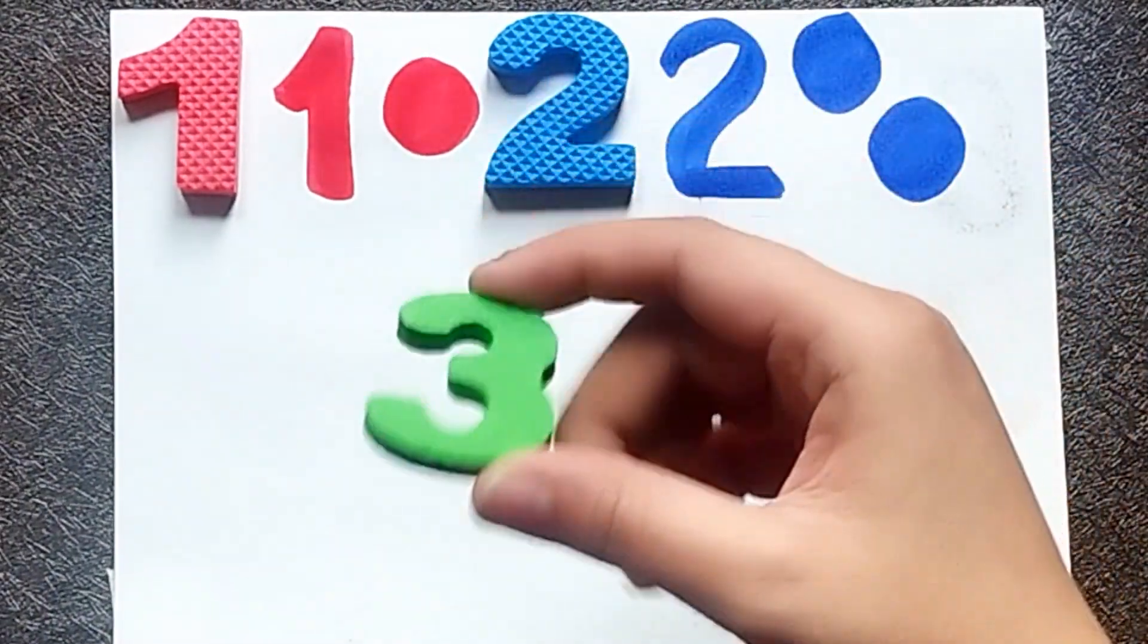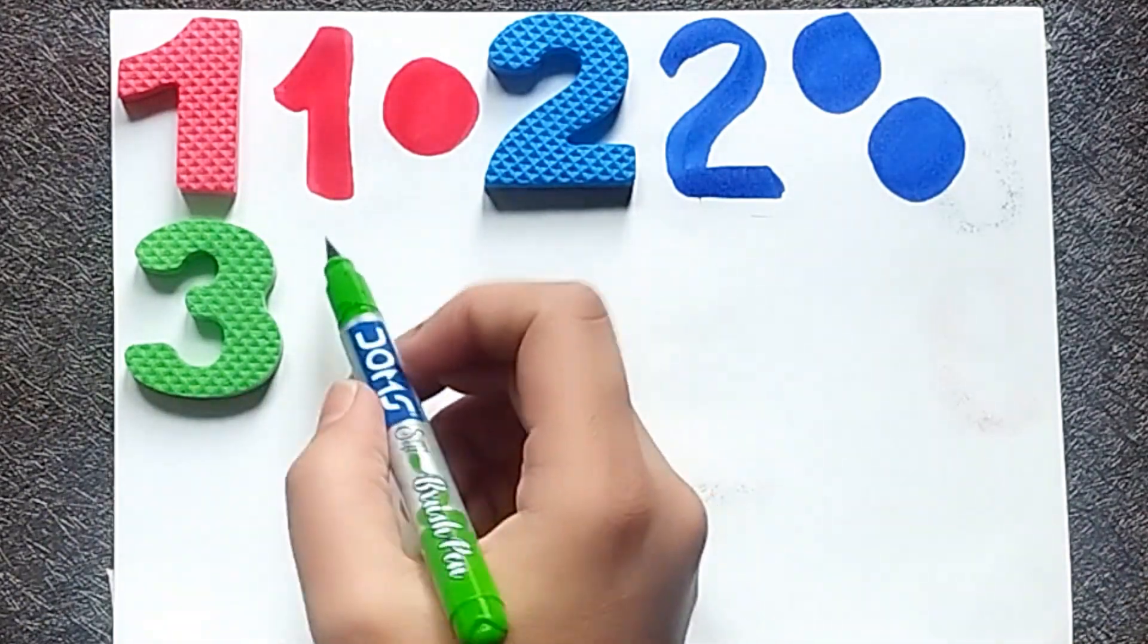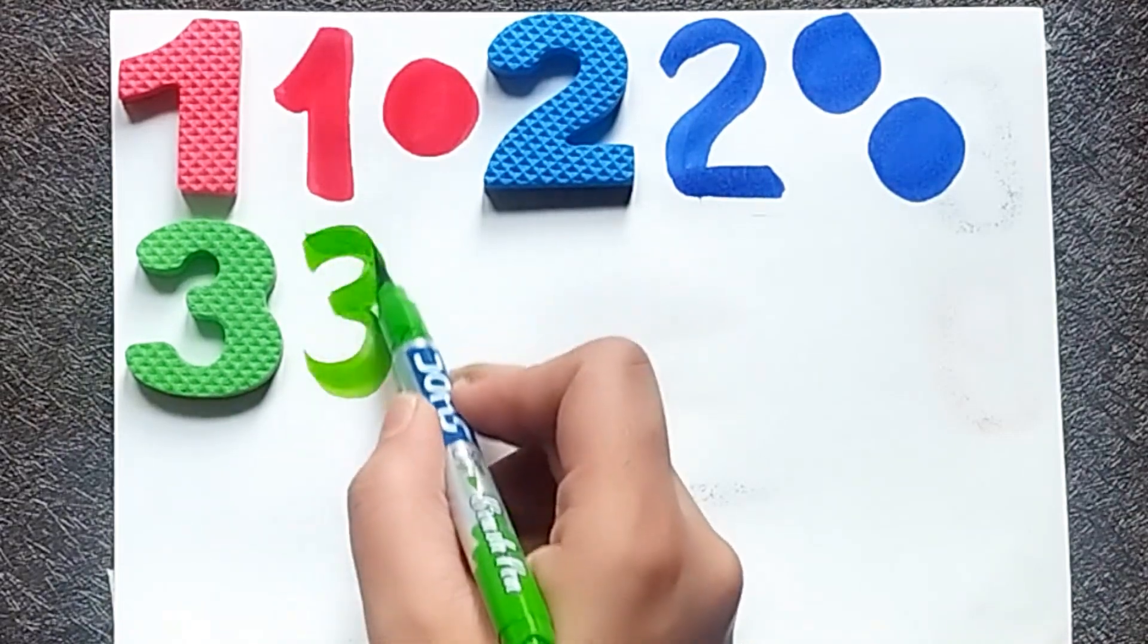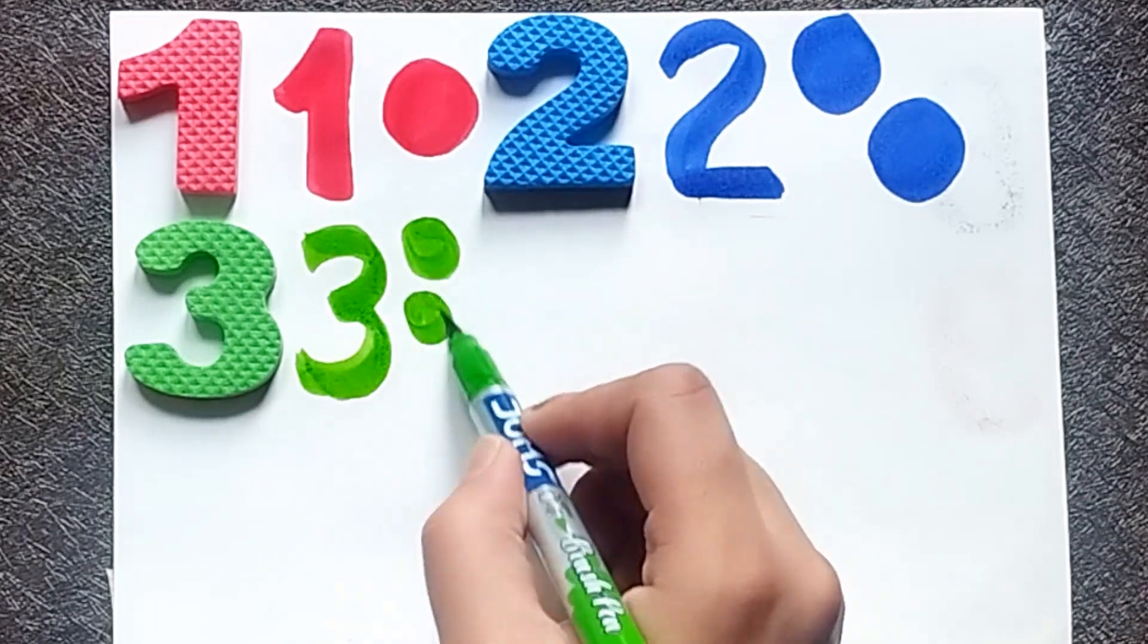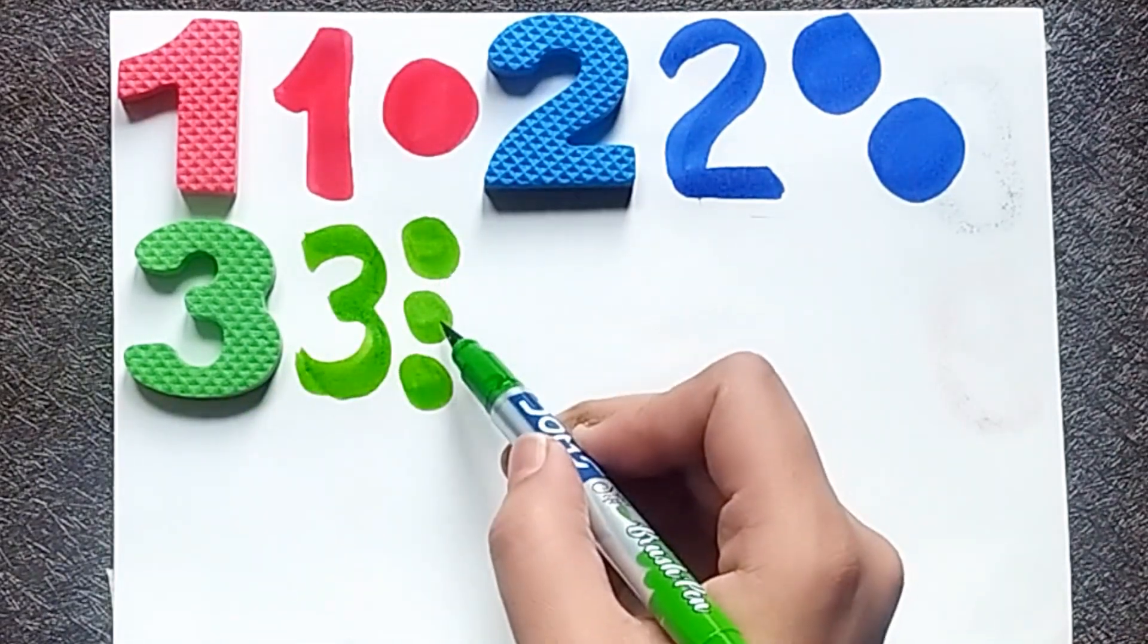Green color number 3. I am drawing number 3. Number 3. One ball, two balls, three balls.